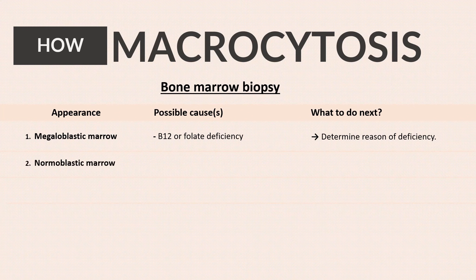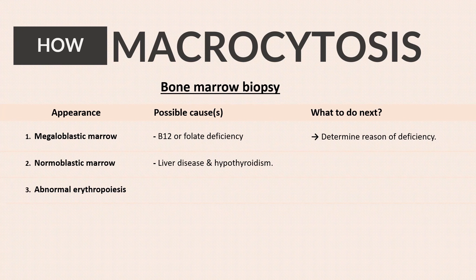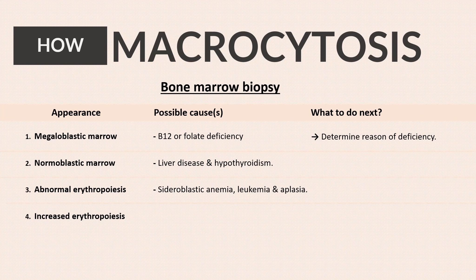Second, normoblastic marrow — macrocytosis with normoblastic marrow is seen in liver disease and hypothyroidism. Third, abnormal erythropoiesis — if this type of marrow is seen, causes may be sideroblastic anemia, leukemia, and aplasia. The fourth possible appearance is increased erythropoiesis, which is seen in cases of hemolysis, and then evaluation for the causes of hemolysis is needed.